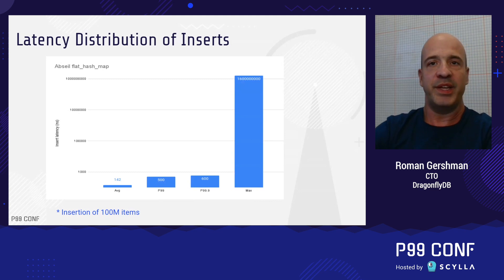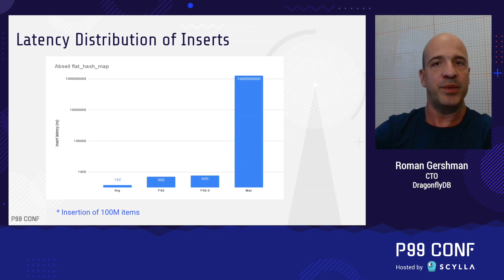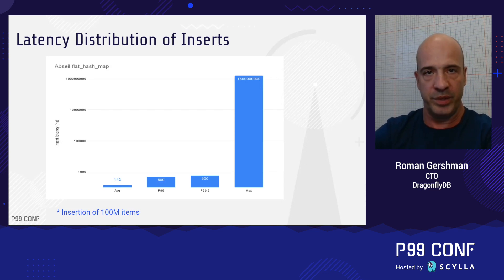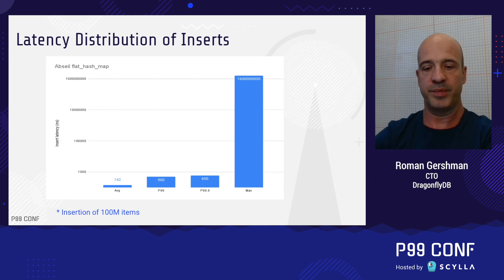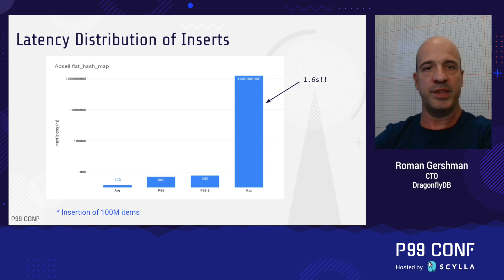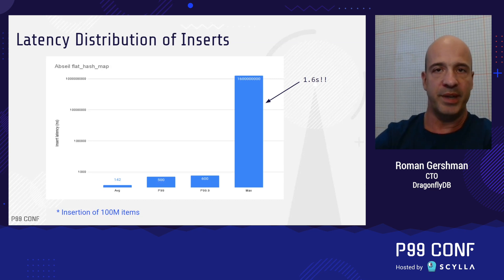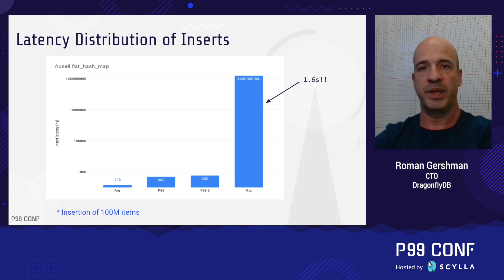You can see that this flat hash map is really, really fast. It takes only 150 nanoseconds on average to do an insert — almost as fast as writing into RAM. But the maximum latency of a single insert is staggering: it's almost two seconds. You can see it on the right. And by the way, all graphs in this talk use a logarithmic scale. For in-memory stores, one second is almost an eternity.